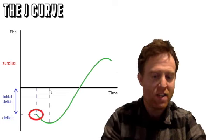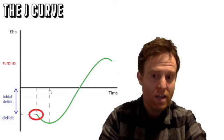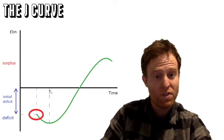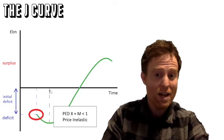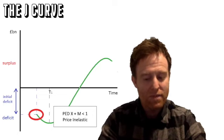The J-curve takes that one step further and looks at time. They argue that if you're thinking about a devaluation on the current account deficit to begin with, in the short term the price elasticity of demand will actually be negative and inelastic.